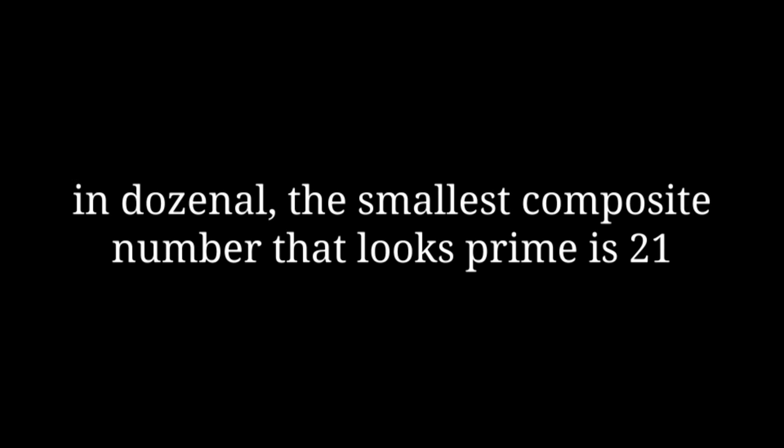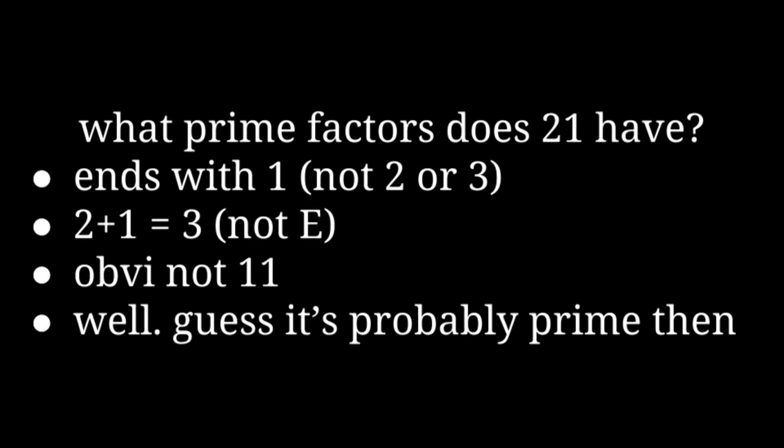Let's skip to the punchline. What's the smallest composite number that looks prime in decimal? Well, it's actually two dozen 1. It ends with 1, so it's not even, and it's not divisible by 3. 2 plus 1 is 3, so it's not divisible by 11. And it's very clearly not divisible by dozen 1. This number is actually equal to 5 squared — two dozen 1 equals 25 in decimal. Again, if you have your multiplication tables properly memorized, you could just recognize this number and its factors, but if you don't, you're out of luck.